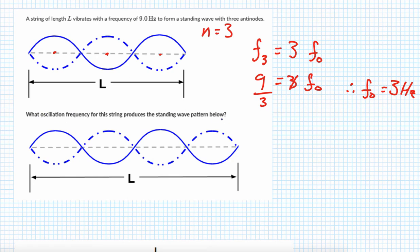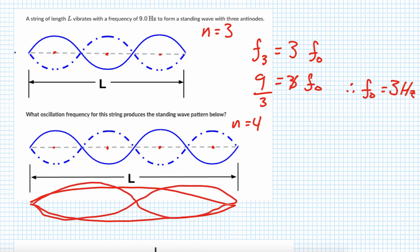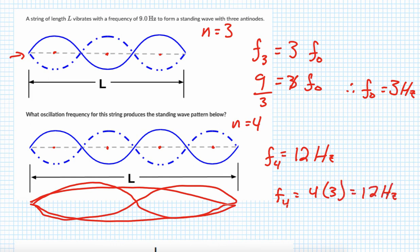Now we come down and count the antinodes — there are four harmonics here. You could use the equation, or you can just note that each harmonic takes 3 Hertz: 3 Hertz makes the first harmonic, 6 Hertz makes the second, 9 Hertz makes the third, so this one has to be 12 Hertz. Using the equation, the fourth harmonic is 4 times the fundamental, which gives the same answer. Going up is easy once you know the fundamental.